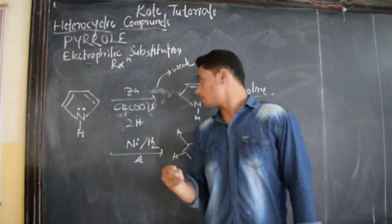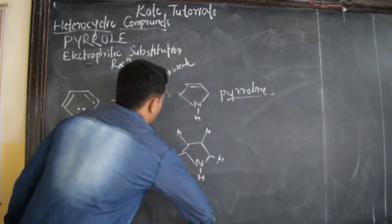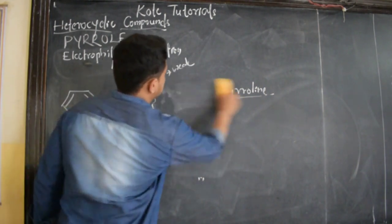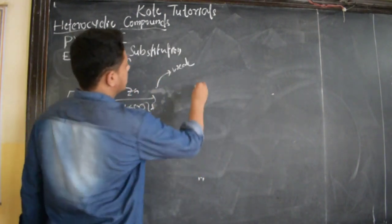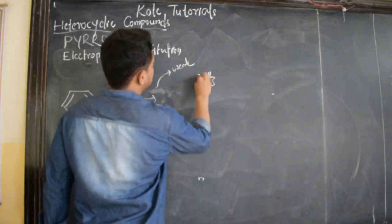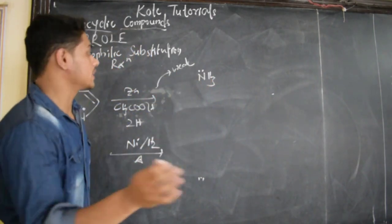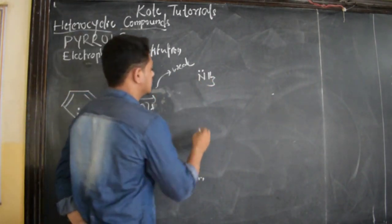The pyrrole - we know that ammonia, if this is ammonia, this is ammonia NH3. Because of this lone pair of electrons, it is acidic - sorry, it is basic in nature, isn't it?